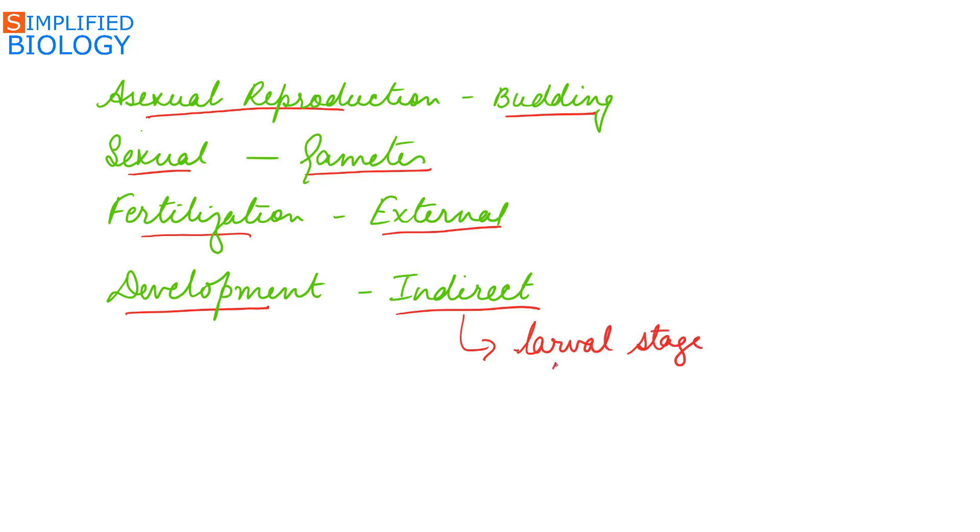Development is indirect, means they possess a larval stage. The larvae are ciliated and they are referred to as planula. So these are the characteristics of Phylum Coelenterata.